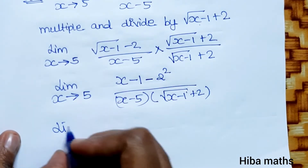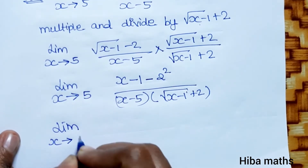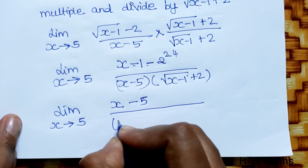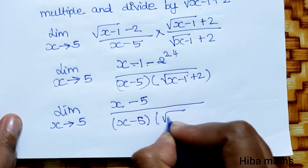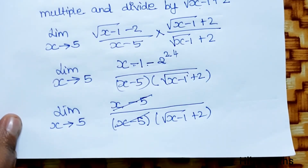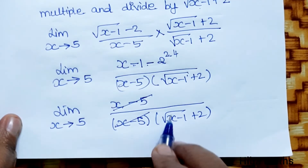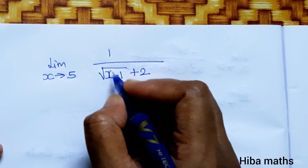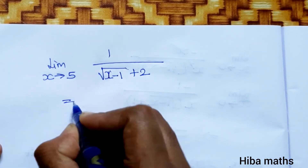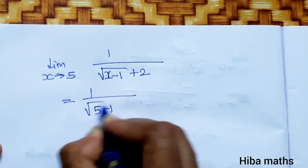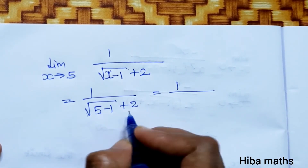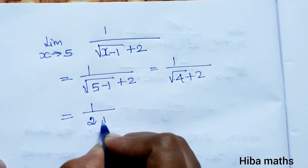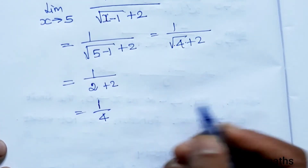The denominator is (x minus 5) into [root (x minus 1) plus 2]. The (x minus 5) terms cancel out, leaving 1 divided by [root (x minus 1) plus 2]. Substituting x equals 5: 1 divided by [root (5 minus 1) plus 2] equals 1 divided by [root 4 plus 2]. Since root 4 equals 2, this gives 1 divided by 4.